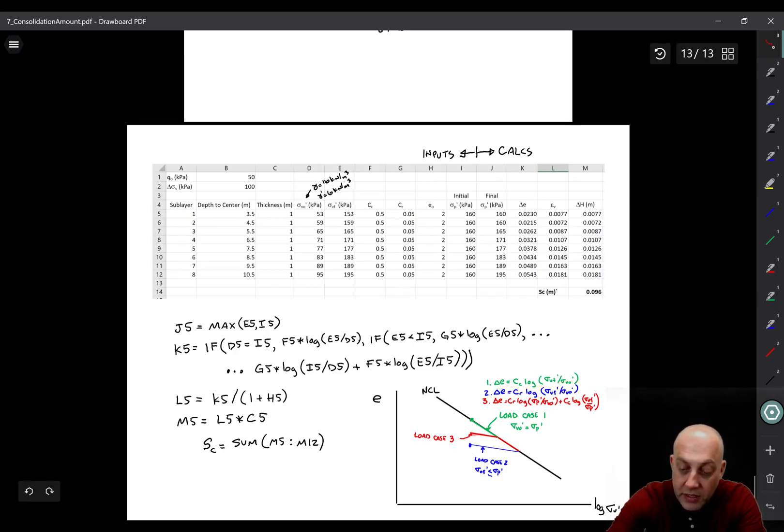Load case three is a little more complicated. That's where we go part of the way along the C sub R line as a reloading stage. Then we reach the maximum past pressure, turn the corner, and do the rest of the stage along the C sub C line or on the normal consolidation line. This one requires now a little bit of a more complicated equation. We start out going here, so from Sigma V not prime to Sigma P prime, we're going along C sub R. So Delta E is equal to C sub R times log of Sigma P prime over Sigma V not prime. That's the change in void ratio along that line. Plus C sub C times log of Sigma V f prime divided by Sigma P prime. So that's the change in void ratio along that part of the line.